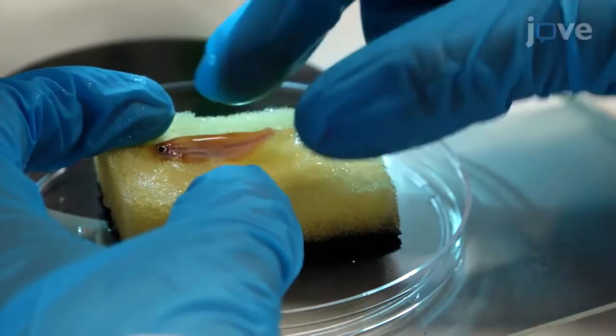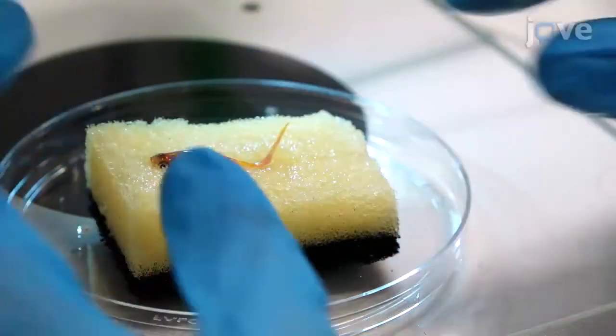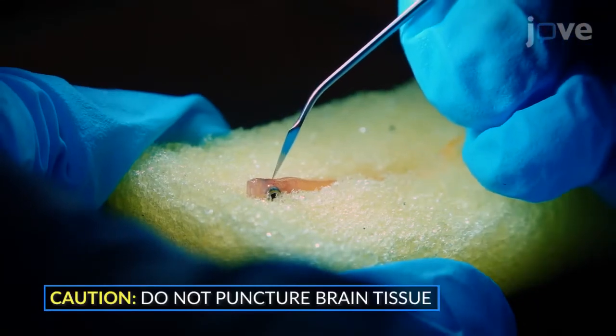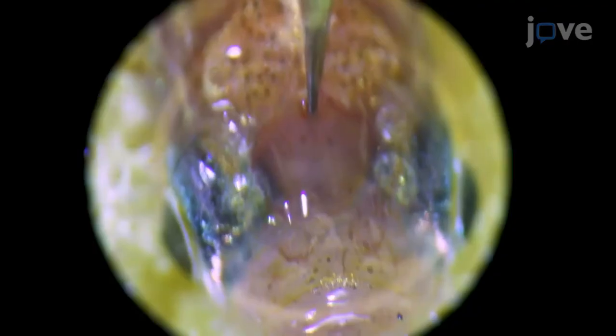Place the sedated fish dorsal side up onto a pre-wetted sponge under the stereo microscope, and use a stainless steel dissecting micro-knife with a 40mm cutting edge and 0.5mm thickness to carefully create a small hole.